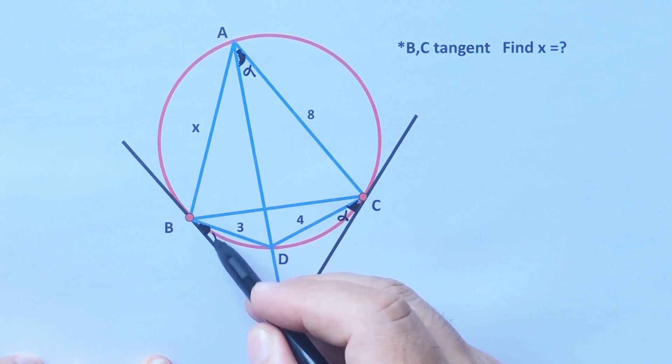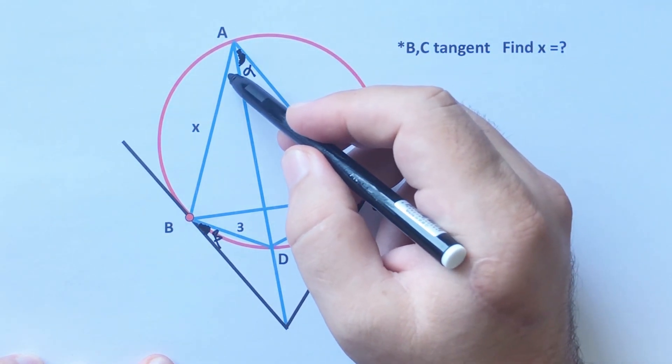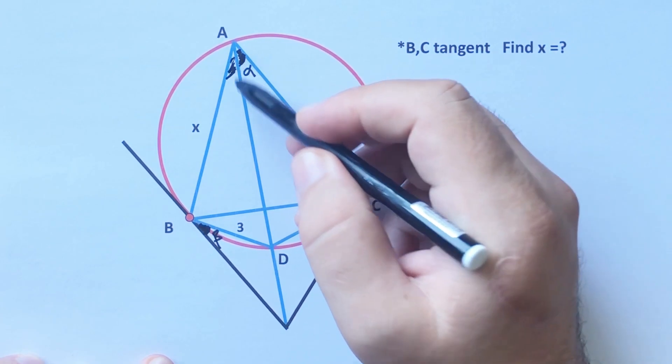And if here is beta, this arc must be two beta, right? Therefore here must be beta.